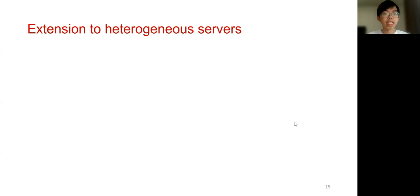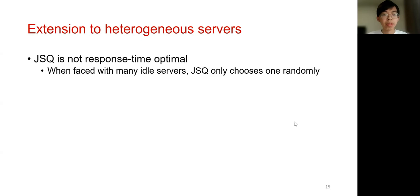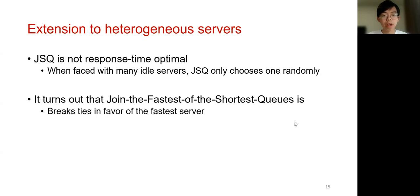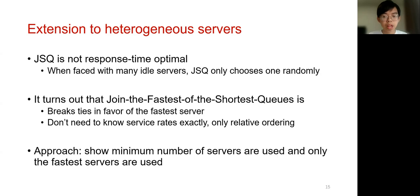So after the homogeneous case, we can now extend the results to heterogeneous servers. As we previously mentioned, JSQ is not response time optimal because when there are many idle servers, JSQ can only choose one randomly. But we show that JFSQ is optimal because it can break ties in favor of the fastest servers. And particularly, JFSQ doesn't need to know the service rate exactly because it only needs to compare the service speed of two servers. The key to prove our results is to show that JFSQ will only use fastest servers and will use minimum number of servers to satisfy the traffic demand, and thus it can achieve optimality in mean response time.